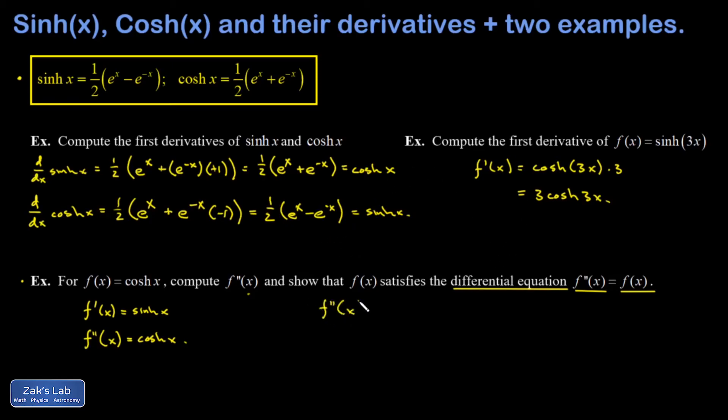You would say f double prime of x is equal to cosh x. But that's equal to the original function f of x. And we've shown the second derivative is equal to the original function. Therefore, cosh x satisfies the second order differential equation.